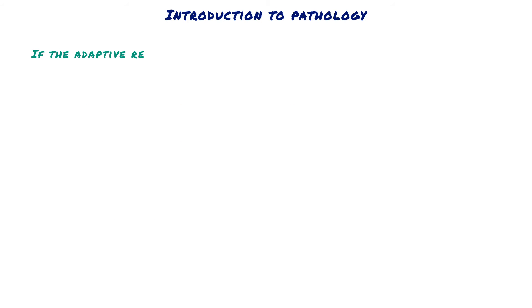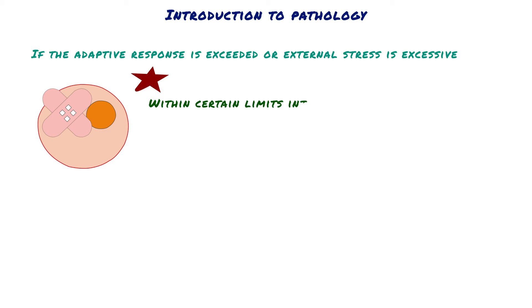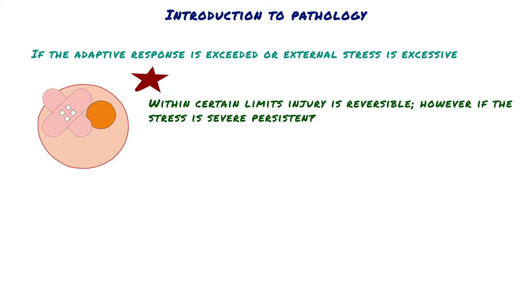If the adaptive response is exceeded or external stress is excessive, cell injury develops. Within certain limits, injury is reversible. However, if the stress is severe, persistent, or rapid in onset, it results in irreversible injury with severe clinical manifestations.